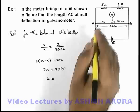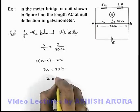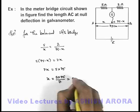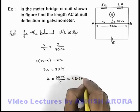So here the value of x, the length AC which we are required to find, is 5 into 75 by 7. On simplifying, we are getting 53.57 centimeters.